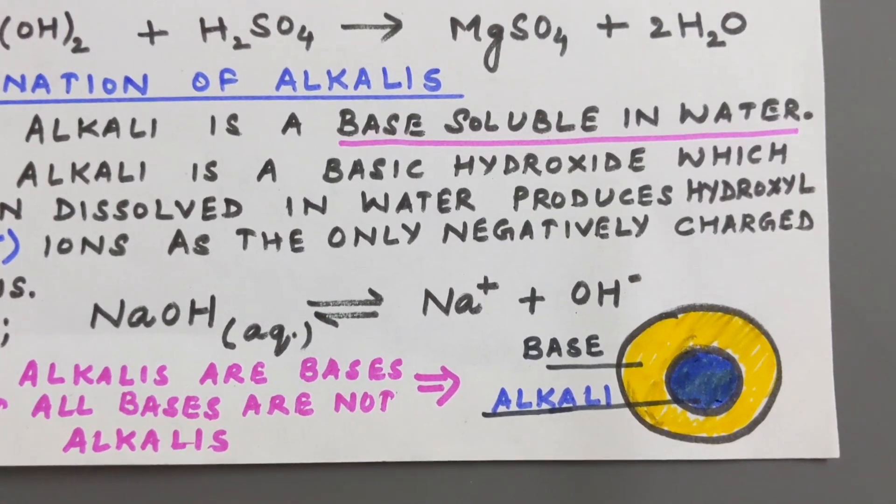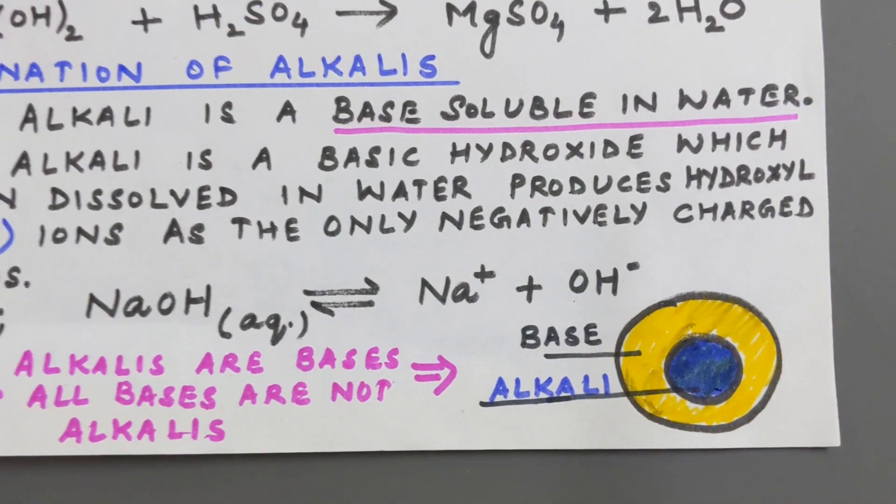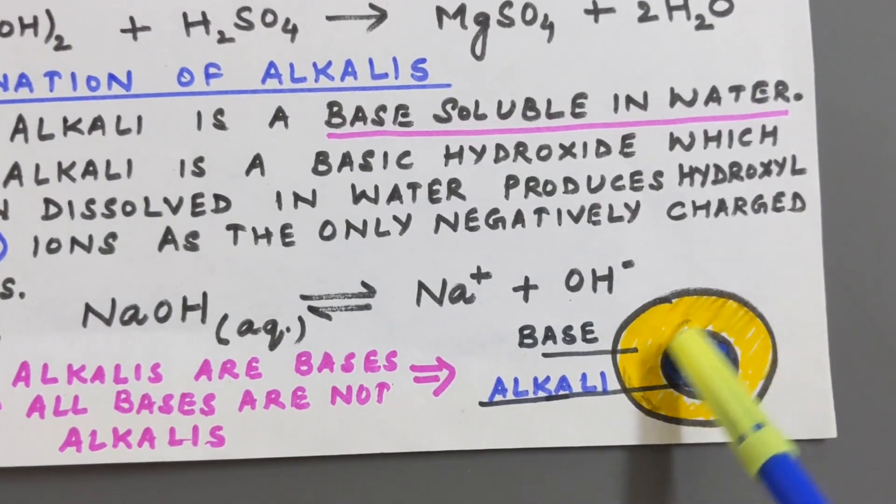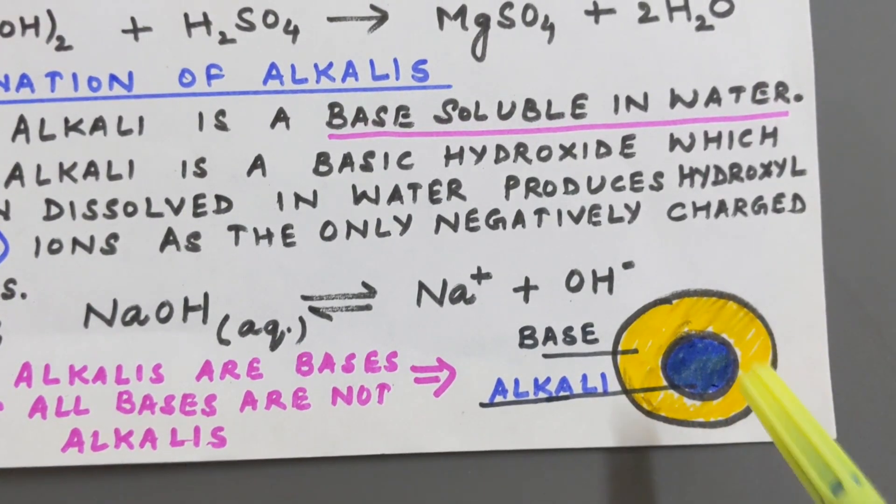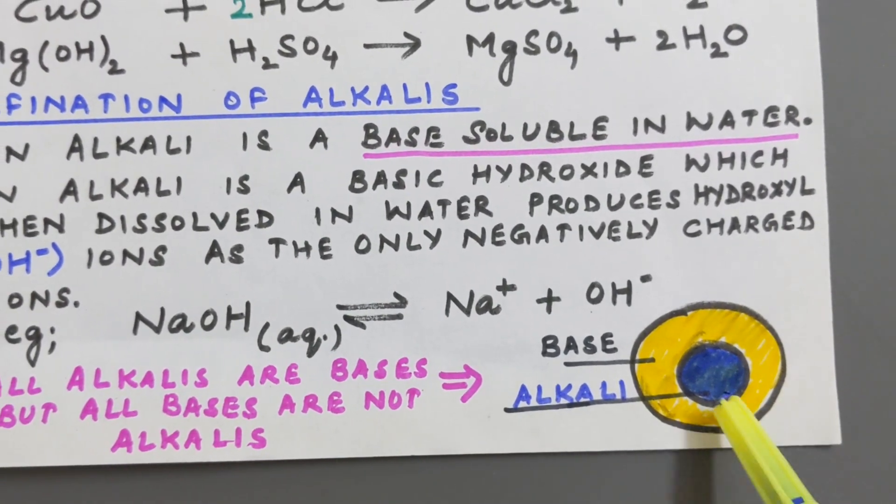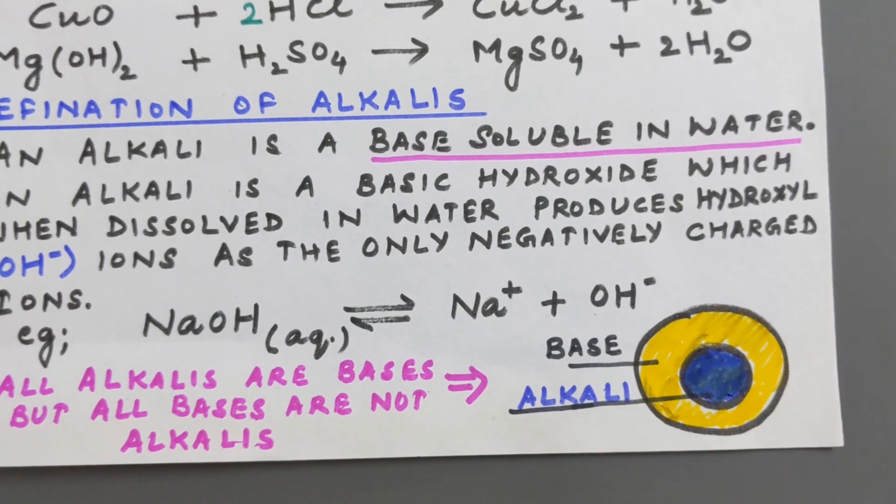Only those bases which are soluble in water are known as alkalis as can be shown with the help of this Venn diagram. This part shows alkalis and the outer part shows bases, and actually alkalis are also part of the bases. So alkalis are those bases which are soluble in water.